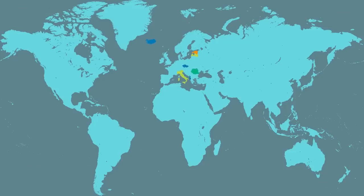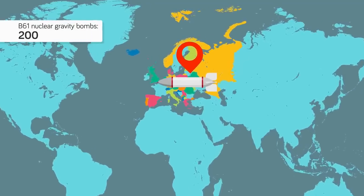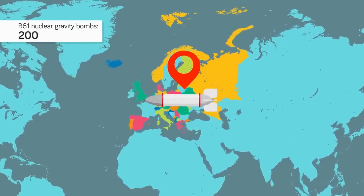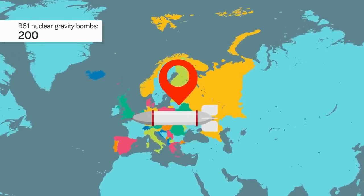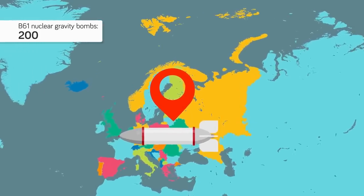4. The United States protects 31 nations with its nuclear umbrella, all of NATO, Japan, South Korea, and Australia. A nuclear attack against any of these nations will elicit an immediate response by the US. 3. The US maintains 200 B61 nuclear gravity bombs deployed at forward bases in Europe for use by US and NATO air forces. 2. During the Cold War the US maintained up to 950 nuclear weapons in South Korea.